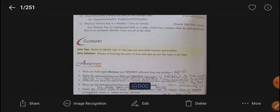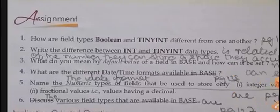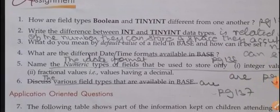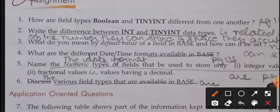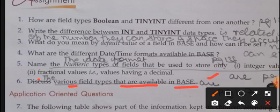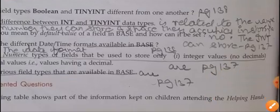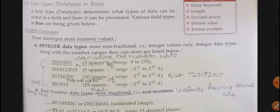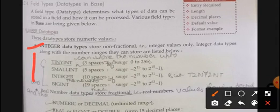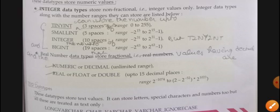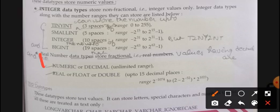Now the next question, that is your sixth question: Discuss the various field types that are available in Base. What are the field types? So first you have to write yourself, instead of discuss write the: The various field types that are available in Base are. After writing this, we'll switch over again to page 137 in order to get the answer of the question. You have to write this first: Integer, all of this, which we have already discussed. You have to write all of this.